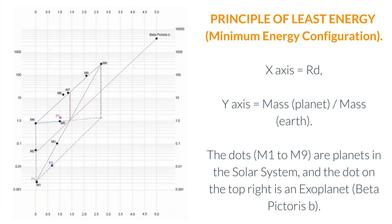Principle of Least Energy, Minimum Energy Configuration. X axis equals Rd, Y axis equals mass. Planet mass Earth. The dots M1 to M9 are planets in the solar system.